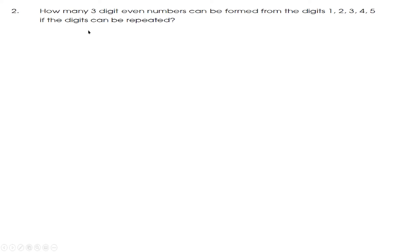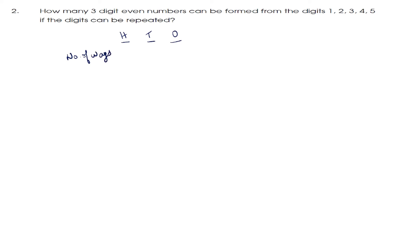Next question: how many 3-digit even numbers can be formed from the digits 1, 2, 3, 4, 5 if the digits can be repeated? Here the digits can be repeated and we need to find the 3-digit even numbers that can be formed using these 5 digits. Let us take the 3 digits: the 100's place, the 10's place and the 1's place. The 100's place can be formed in 5 ways.